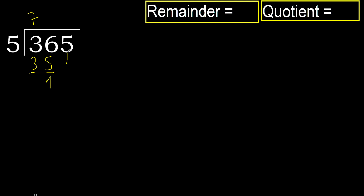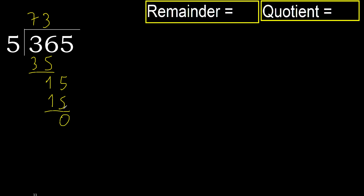1 — next, bring down: 15. 5 multiplied by 4 is 20, which is greater. 5 multiplied by 3 is 15, which is not greater. Subtract: 15 minus 15 equals 0. Next — that is not a number, so subtract.